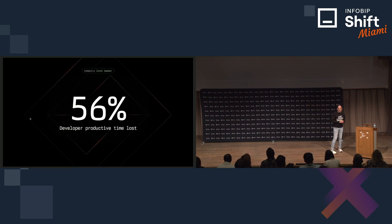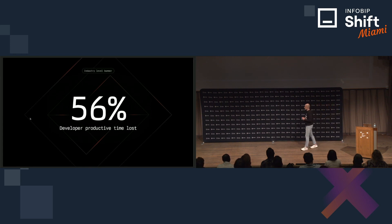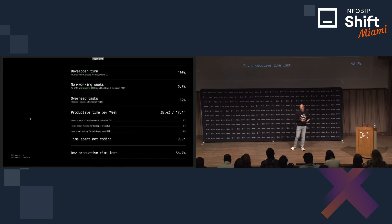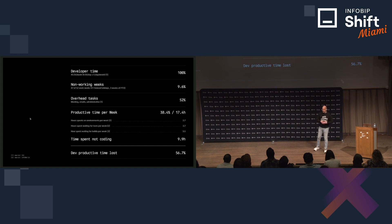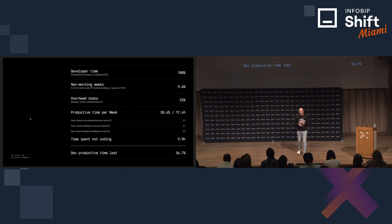56% of developers' productive time is lost on doing things in and around the dev environment. This is not a made-up number — we found two sources and did our own research. When you remove non-working weeks and overhead tasks like email and meetings, you spend another 2.7 hours on dev environments waiting for tests, waiting for builds, basically throwing away a bunch of time.